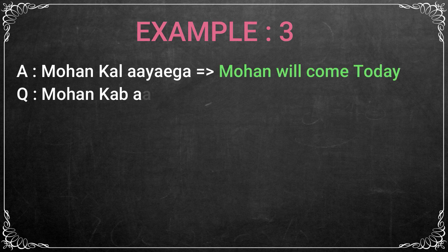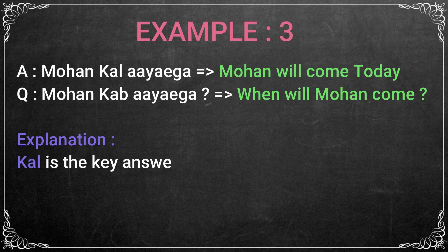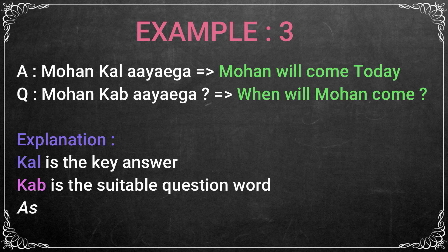Another example: Mohan Kal Aayega. Here, Kal denotes the time. Therefore, the question will be Mohan Kab Aayega? — When will Mohan come?